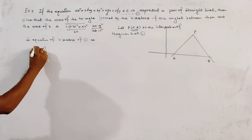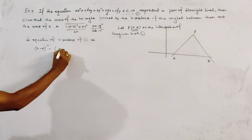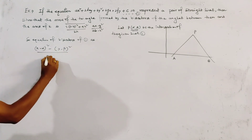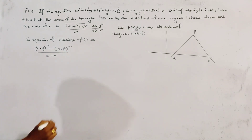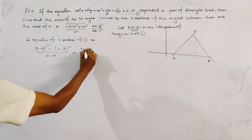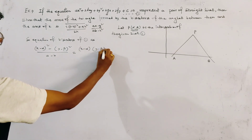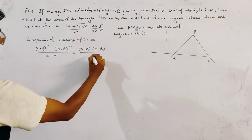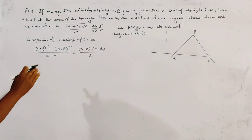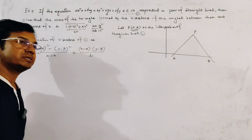The equation of the bisectors of the pair of lines can be written as: (x − α)² − (y − β)² / (a − b) = (x − α)(y − β) / h. This is a standard result discussed in the previous class, and the link to that class is in the description box.